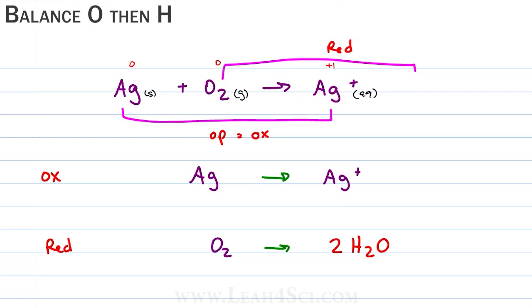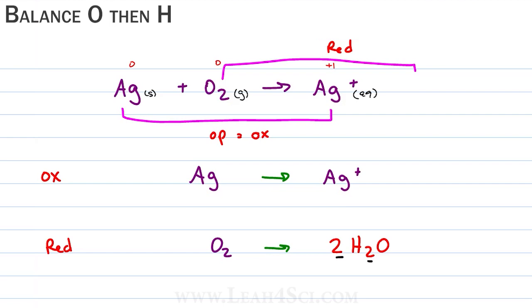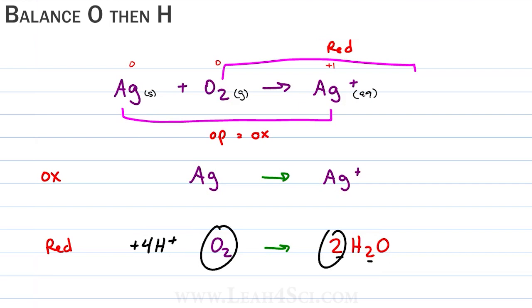The last thing we balance is hydrogen, and now you see why we left it for last — if we first balanced hydrogen then balanced oxygen to get water, every time we add water we add hydrogen, giving us more work. We have two H2O which is four hydrogen, so we add four H+ on the reactant side to balance. Now everything is balanced: four hydrogen, four hydrogen, two oxygen, two oxygen. Atoms are balanced, so let's move on to charge.